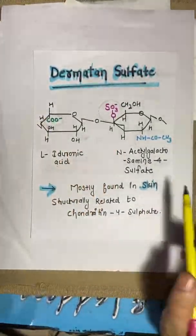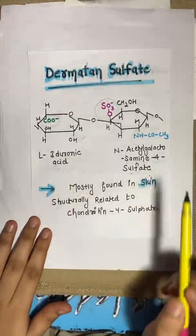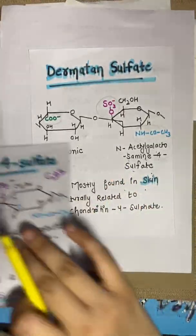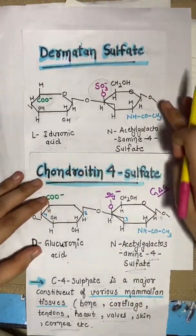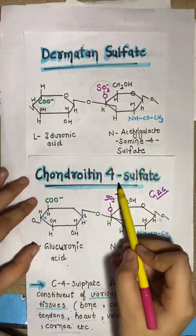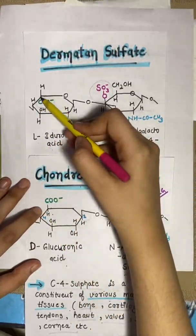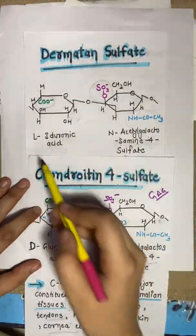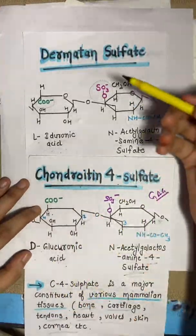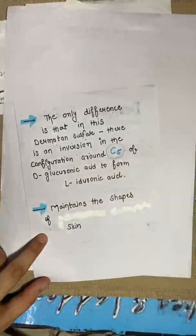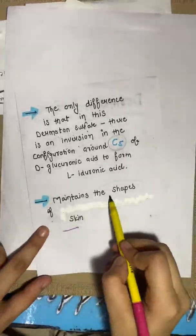The fourth GAG is dermatan sulfate. Its structure consists of L-iduronic acid and N-acetyl galactosamine 4-sulfate. It is mostly found in skin. Comparing its structure with chondroitin 4-sulfate, they are almost similar — the only difference is an inversion of the C5 carbon configuration, converting D-glucuronic acid to L-iduronic acid. Dermatan sulfate maintains the shape of the skin.